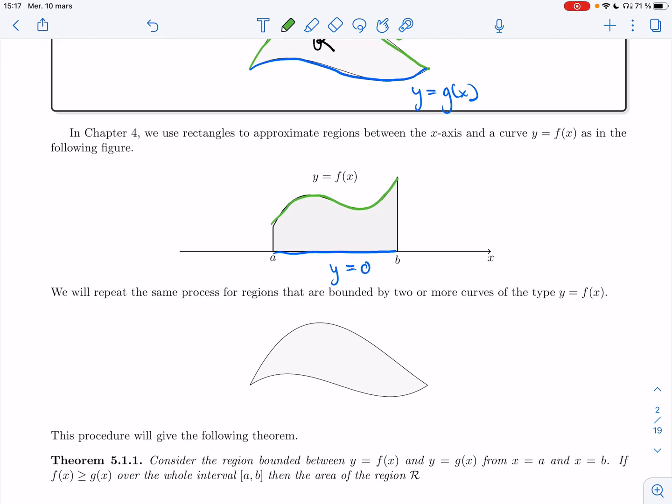We'll repeat the same process, but for more complicated regions now. Just like I said above, we'll have two different curves, like this. And I'm going to assume that this point is at x equals a, and this point is at x equals b, and then some value of y.